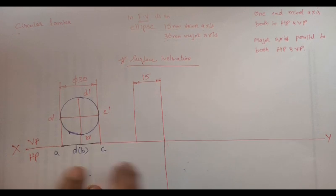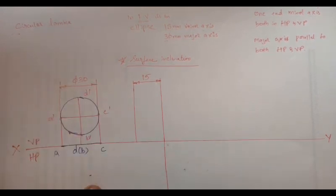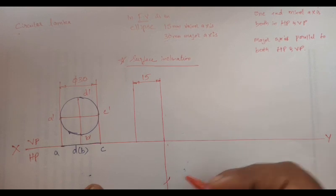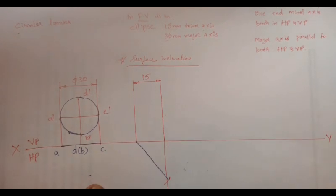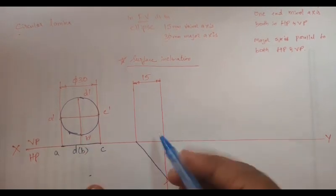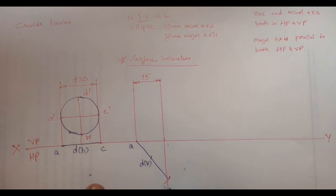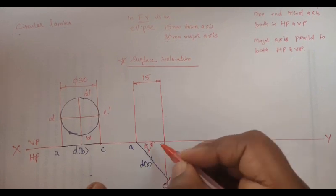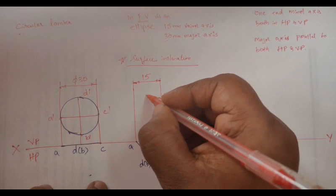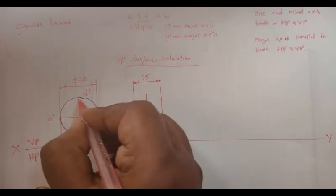I'm going to take the distance of E to C, which is equal to 30. I don't have a compass with me so I'm just showing it with my hand. I'll draw a line and join it with the scale, then take the distance: A to B is 15mm, B to C is 15mm, because the total length of that line is 30mm. I'm going to project this line upwards in order to draw an ellipse in its front view.